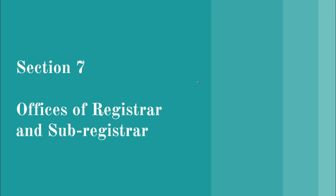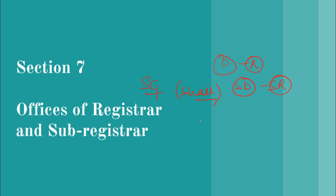Section 7 talks about offices of registrar and sub-registrar. Here 'shall' is used, so it is the mandatory duty of the state government that every district will have a registrar office and every sub-district a sub-registrar office. If the state government wants, the registrar and sub-registrar offices can be amalgamated and sub-registrar functions can be carried on, but in that situation the sub-registrar does not have the right to hear appeals against their own decisions.